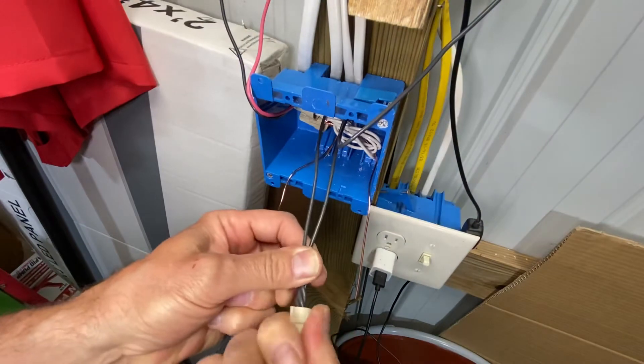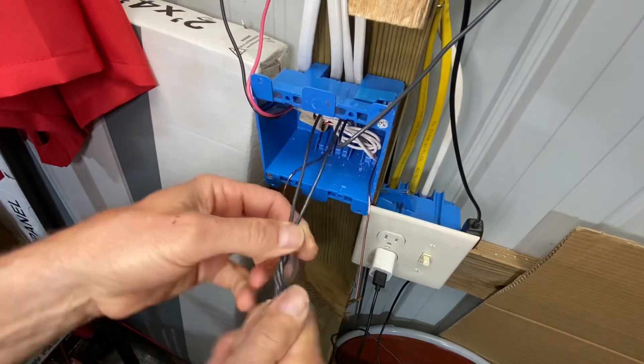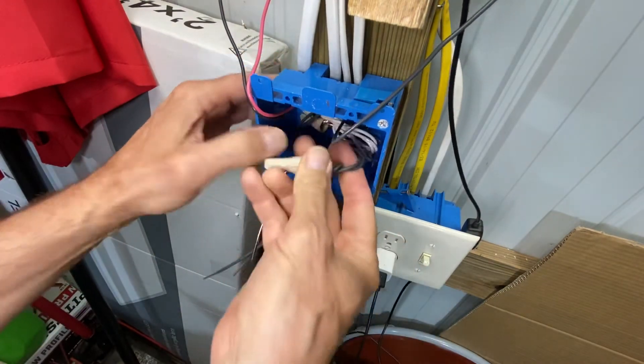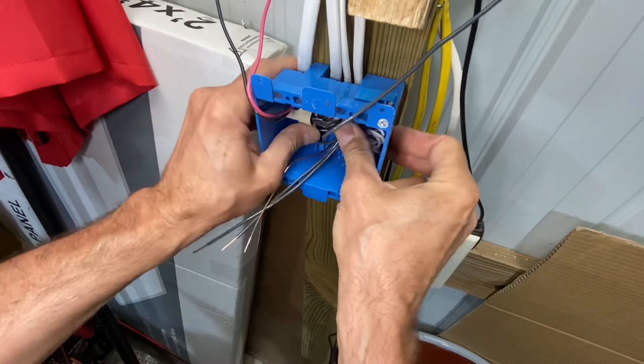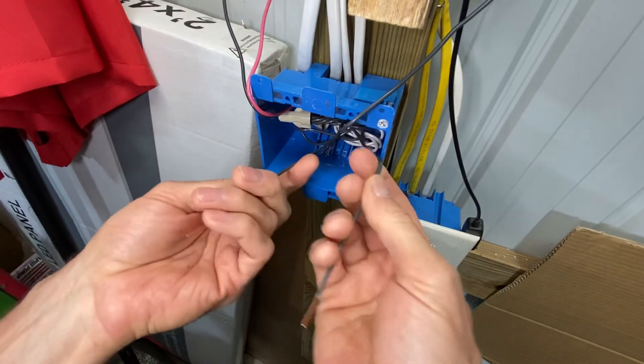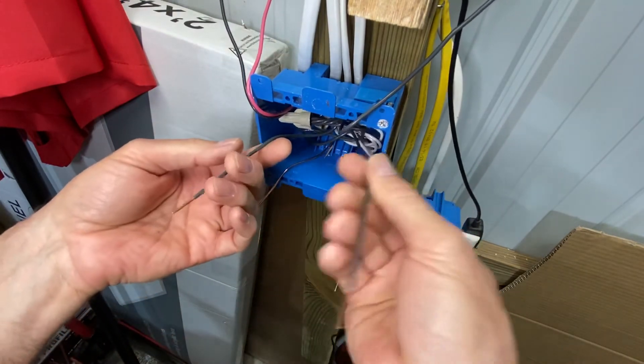Wire nut. Put them on there. Twist. Fold them nice and neat like an accordion back in there. And, you have two feeds. One for the three-way. And, one for the single pole.